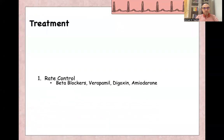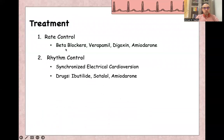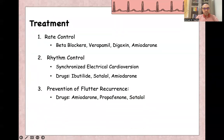Management of atrial flutter includes multiple options: rate control using beta-blockers, calcium channel blockers, digoxin, and amiodarone. Rhythm control options include synchronized electric cardioversion, especially if the patient is unstable, and drugs like ibutilide, sotalol, and amiodarone. For prevention of flutter recurrence, maintenance therapy includes amiodarone, propafenone, and sotalol, as well as radiofrequency ablation.